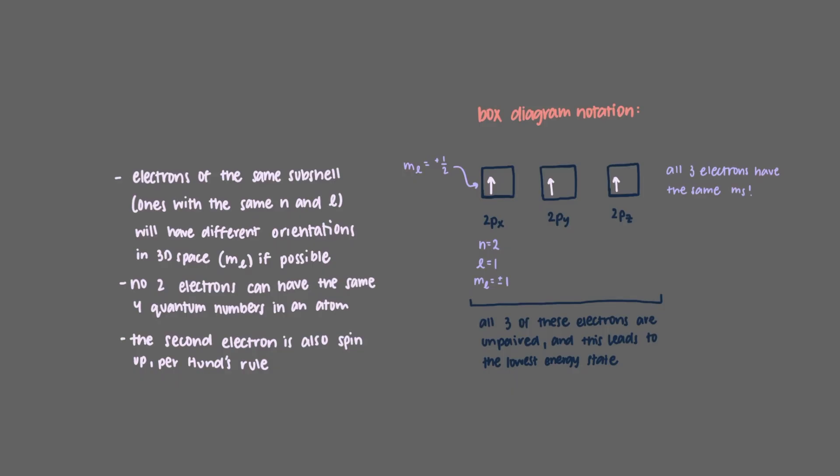Moreover, all three electrons will have the same m sub s spin quantum number. But remember, nothing is actually spinning, as this leads to the least amount of electronic repulsion. This is known as Hund's rule. For any subshell, the lowest energy configuration is that in which electrons will have different values of m sub l and the same m sub s.